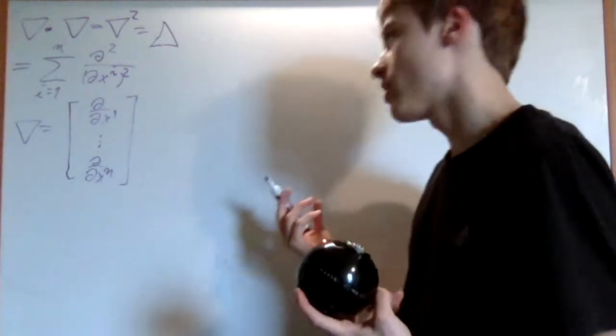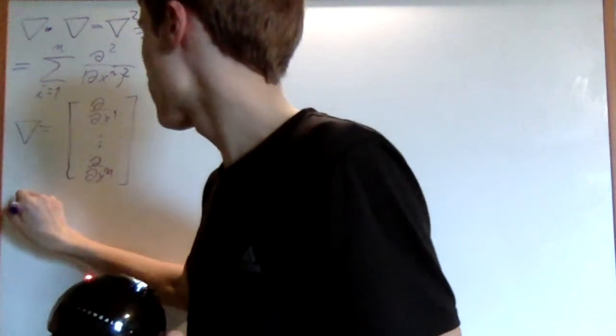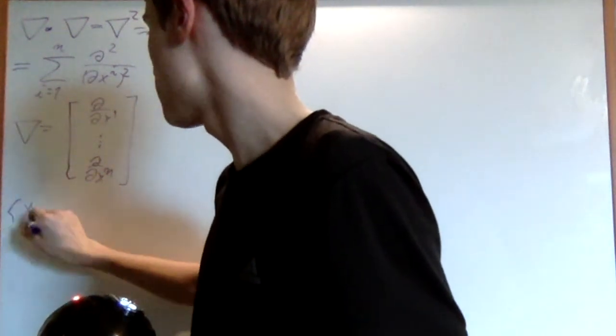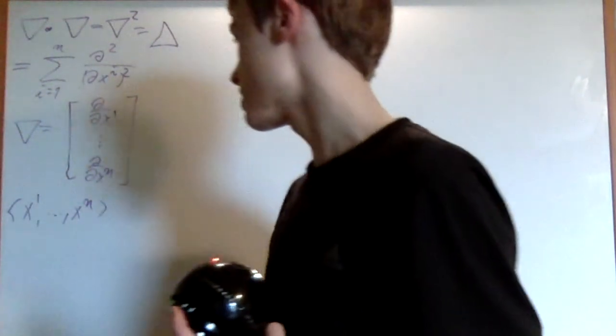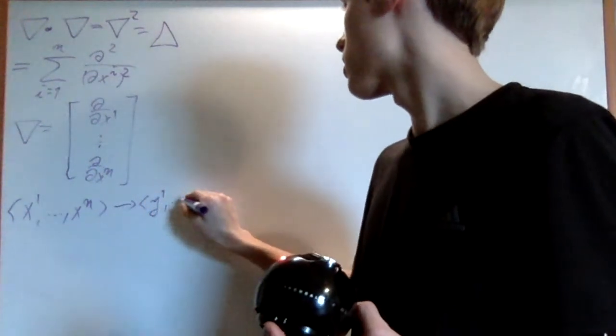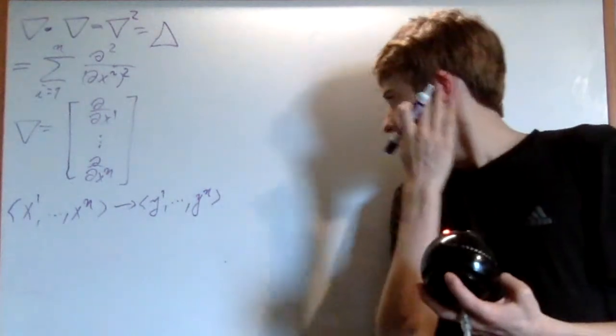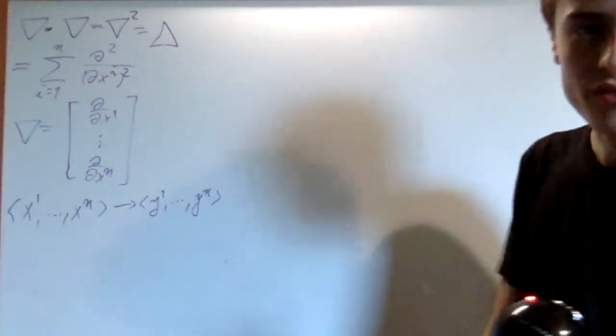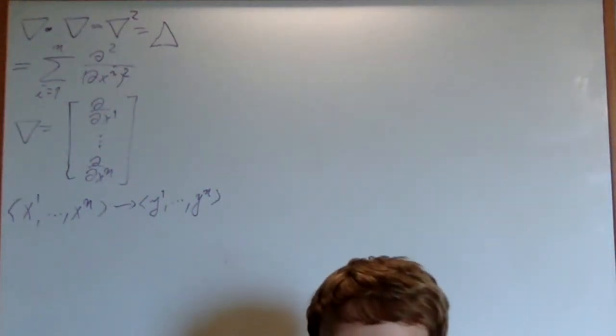So now how can I convert this into different coordinates? Say let's want to convert it from the coordinate system x1 to xn, the standard coordinate system, to say y1 to yn. Well, let's first convert the partial derivatives, and then we can move that up to the second order partial derivatives, and so on and so forth.